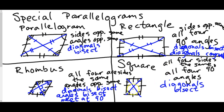So the square has all of the diagonal properties: the diagonals bisect each other, the diagonals are congruent, the diagonals bisect the angles, and the diagonals meet at 90 degrees. We can use these properties to solve different types of problems.